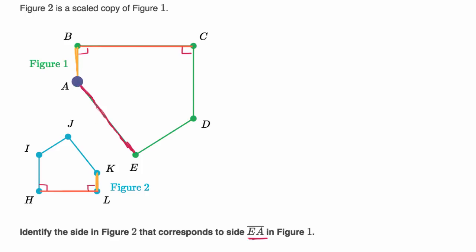And then if we just keep following that side of the shape, we then go to side AE, which would correspond now to, and this is answering our question, to side KJ.